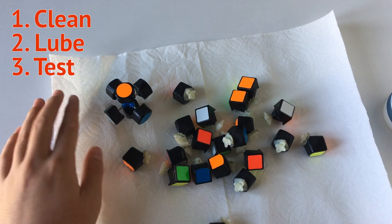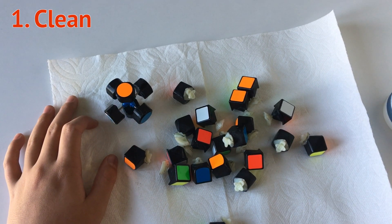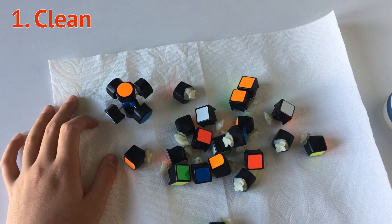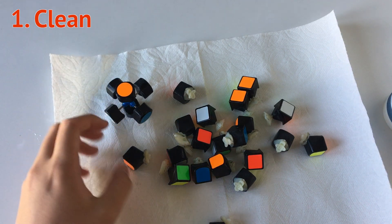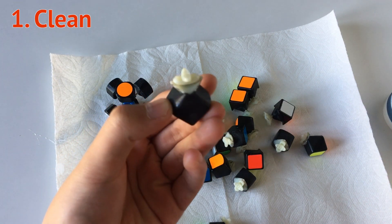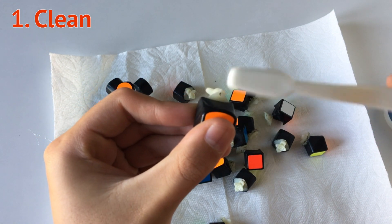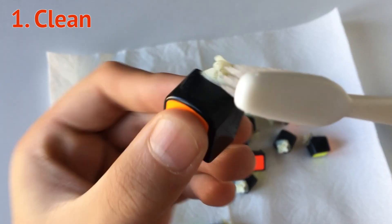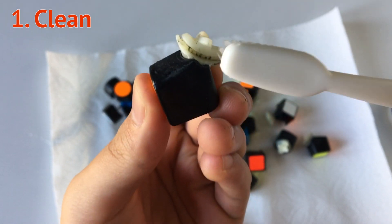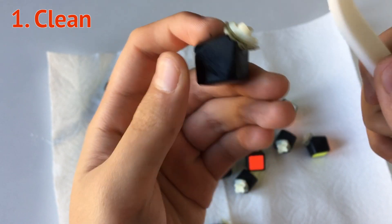All right, so let's get started. What we are going to do is just dip the toothbrush inside the water so we get a little bit of water, and then we are going to rub off all of the black parts of the cube.